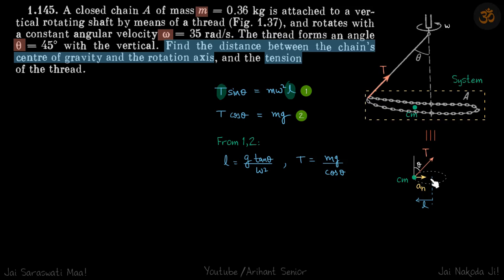We have the normal acceleration towards the center. Now we can write the forces in horizontal and vertical directions. In the horizontal direction, F equals ma, so T sin(theta) equals m omega squared l.